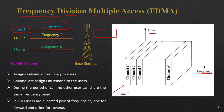The available resources at the base station are divided into different channels — channel one, channel two, channel three, up to channel n — and each channel is allocated to a user. The first key point is that in FDMA, individual frequencies are assigned to individual users.